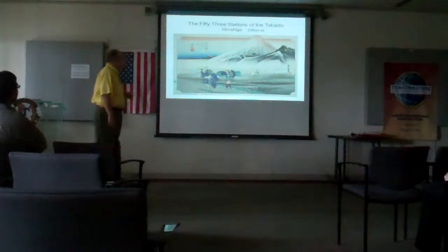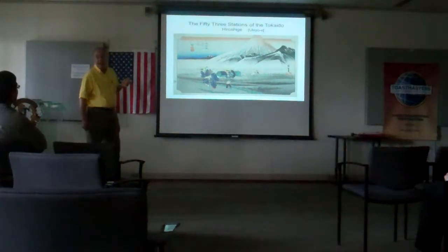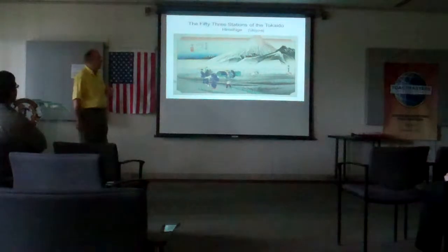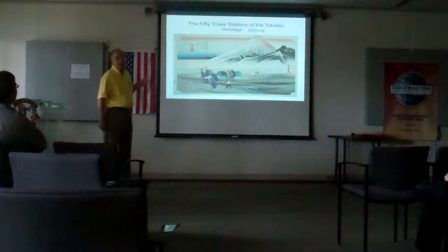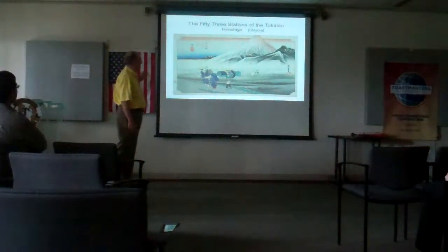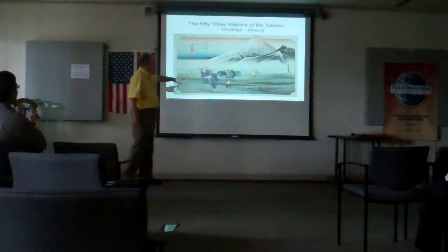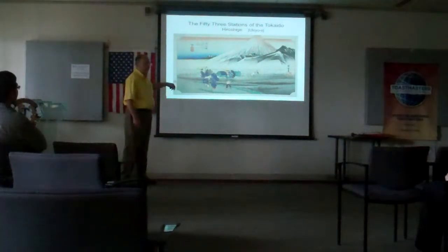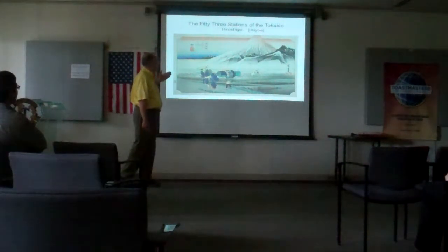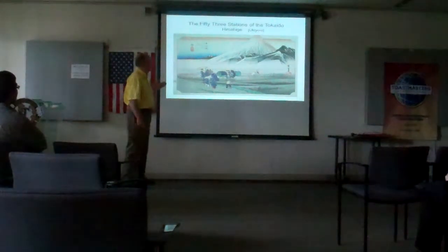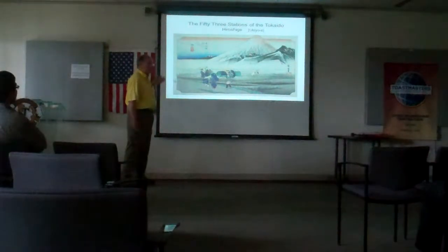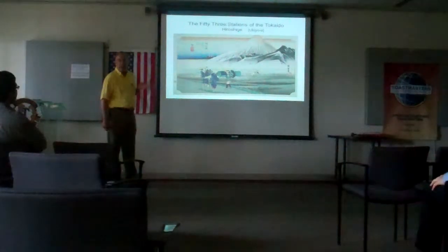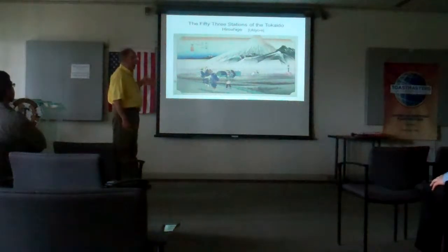Ukiyo-e was very popular in Japan and got wide circulation in Europe. Van Gogh owned dozens of them. The pictures are two-dimensional, often times very small. Perspective is often interesting — what they've done to show three dimensions is rotate the planes to one side or the other, showing three dimensions without showing shadows. Some of that influenced the Impressionists.